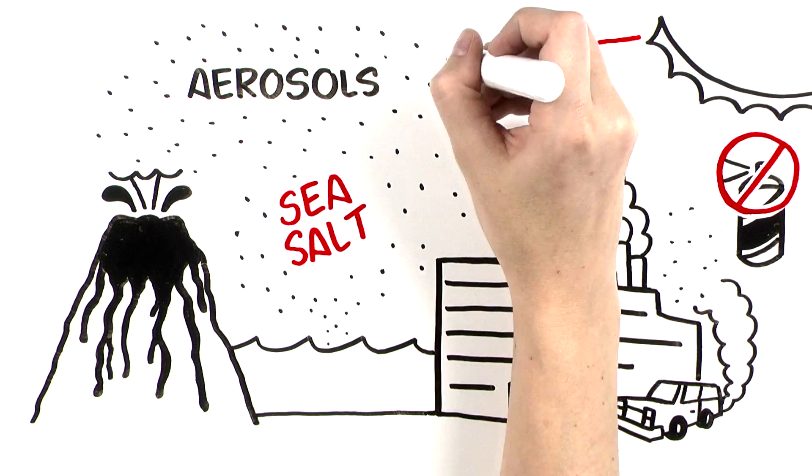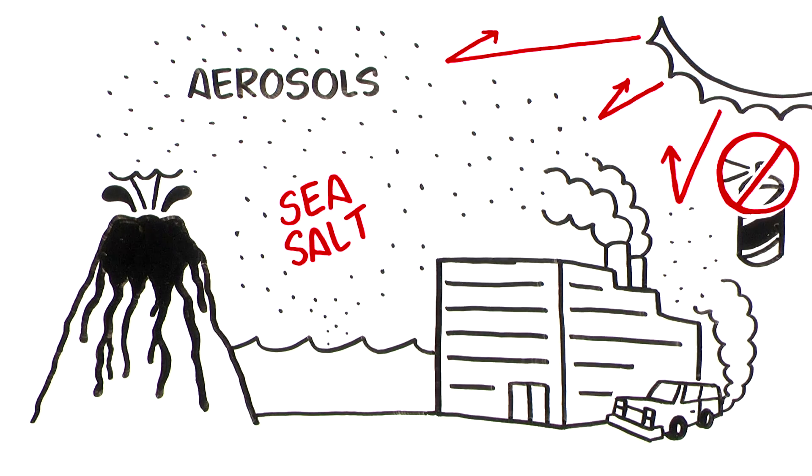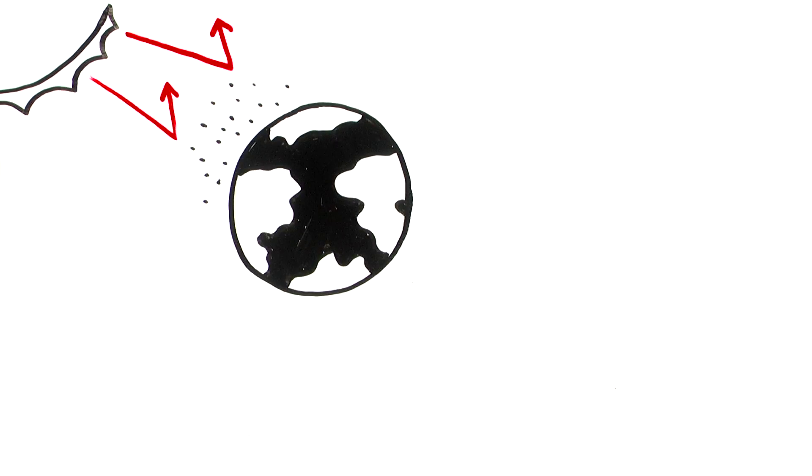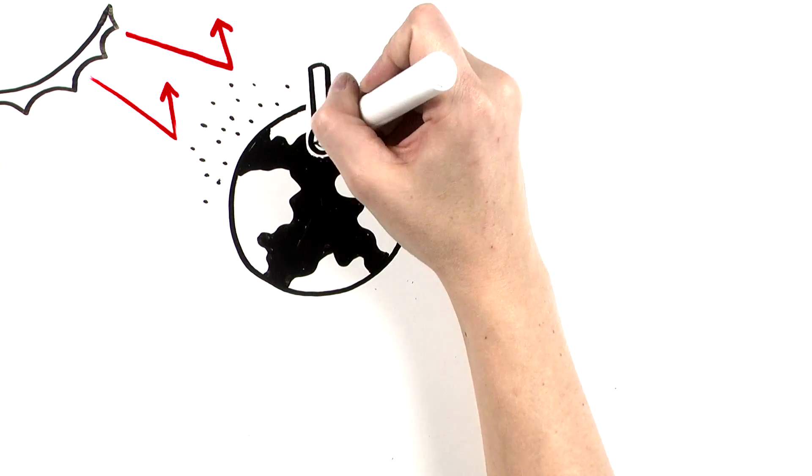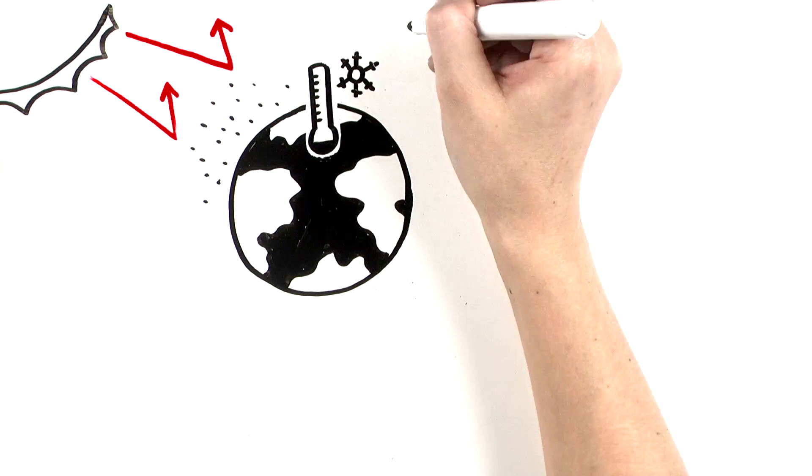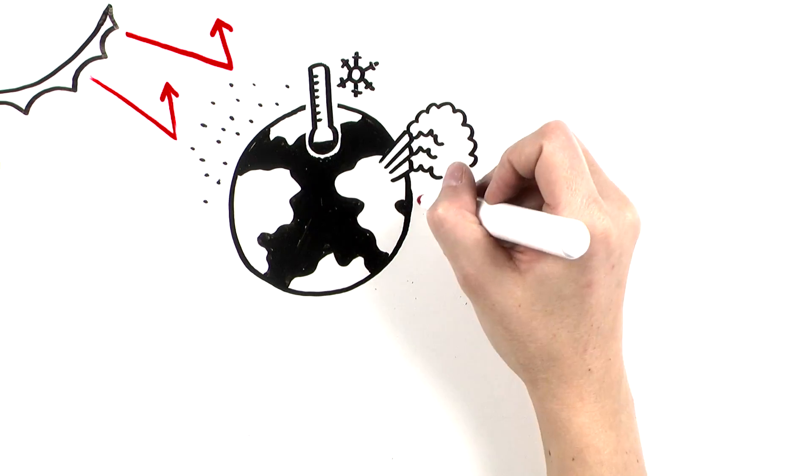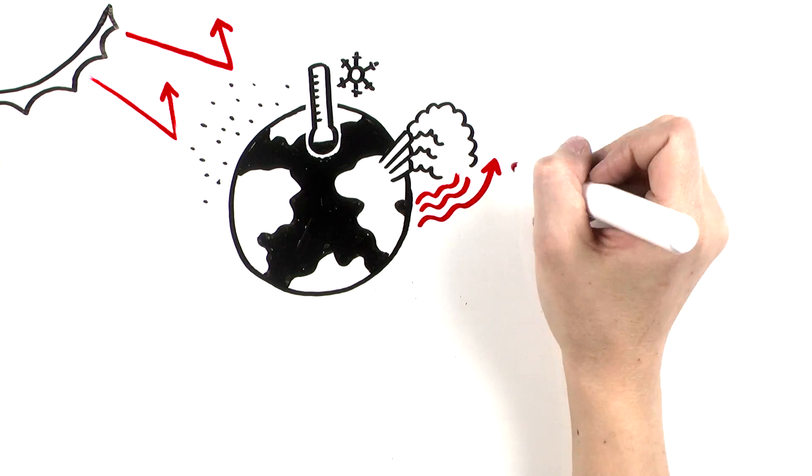Most of these tiny particles in the air reflect the sun's light back to space before it can make it through the atmosphere to our land and oceans. That creates a cooling effect, especially regionally, as less light reaches the surface to be absorbed. And that also means less heat to be trapped by greenhouse gases.